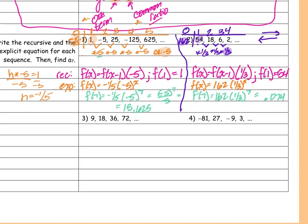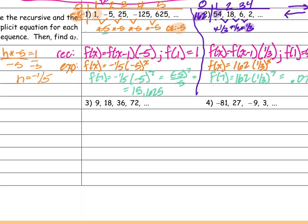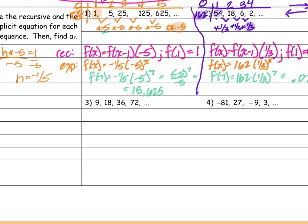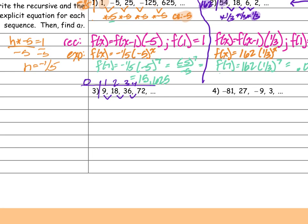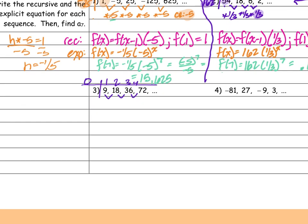Let's go to number 3. I'm going to turn it into a table. How am I getting from one term to the next? Multiply by 2. I'm multiplying by 2.